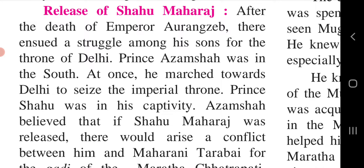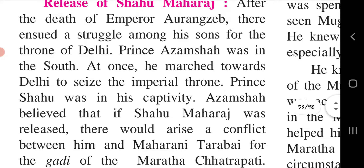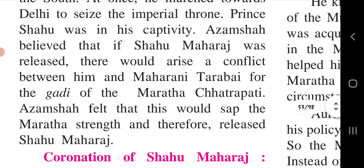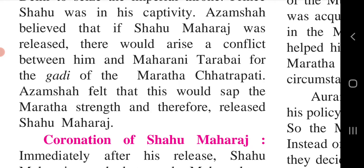After the death of Emperor Aurangzeb, a struggle ensued among his sons for the throne of Delhi. Prince Azam Shah marched from the south toward Delhi to seize the imperial throne. Shahu was in Azam Shah's captivity. Azam Shah thought that releasing Shahu Maharaj would cause a fight between Shahu and Maharani Tarabai for the Gaddi, weakening the Marathas. He therefore decided to release Shahu Maharaj from captivity.